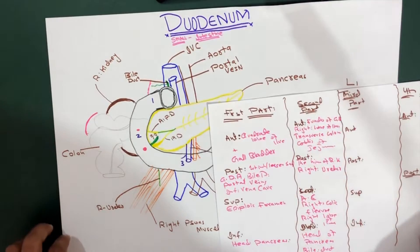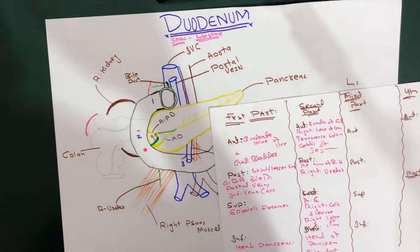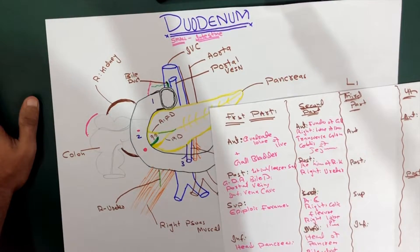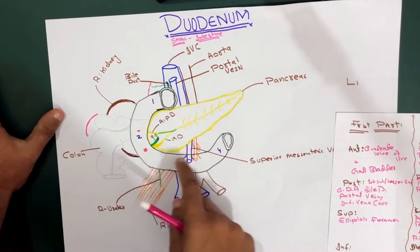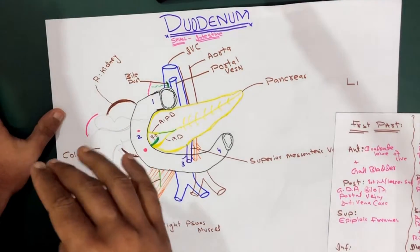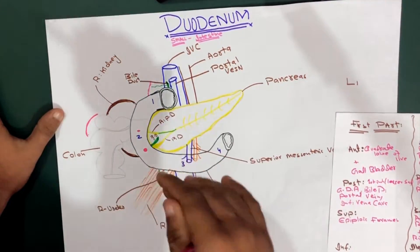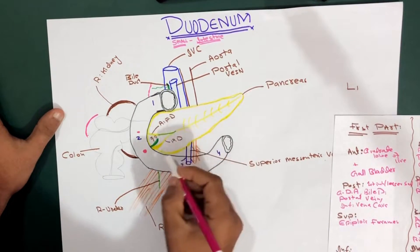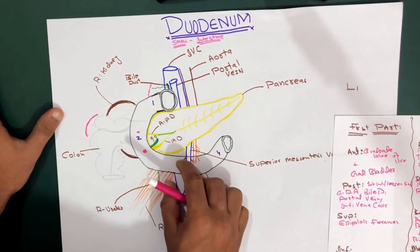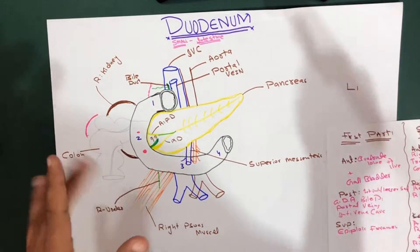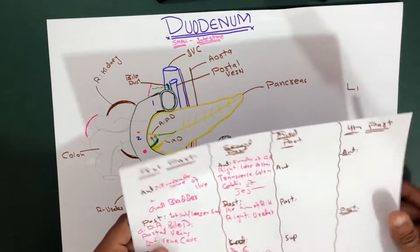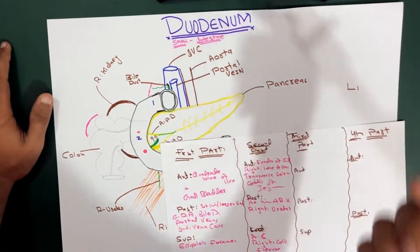Now let's talk about the third part of the duodenum, which is also interesting. Before discussing the relations of the third part, we need a bit of theory. The third part of the duodenum is present horizontally to the left on the subcostal plane, passing in front of the vertebral column and following the lower margin of the head of the pancreas. Now let's talk about the relations of the third part to the structures around it.